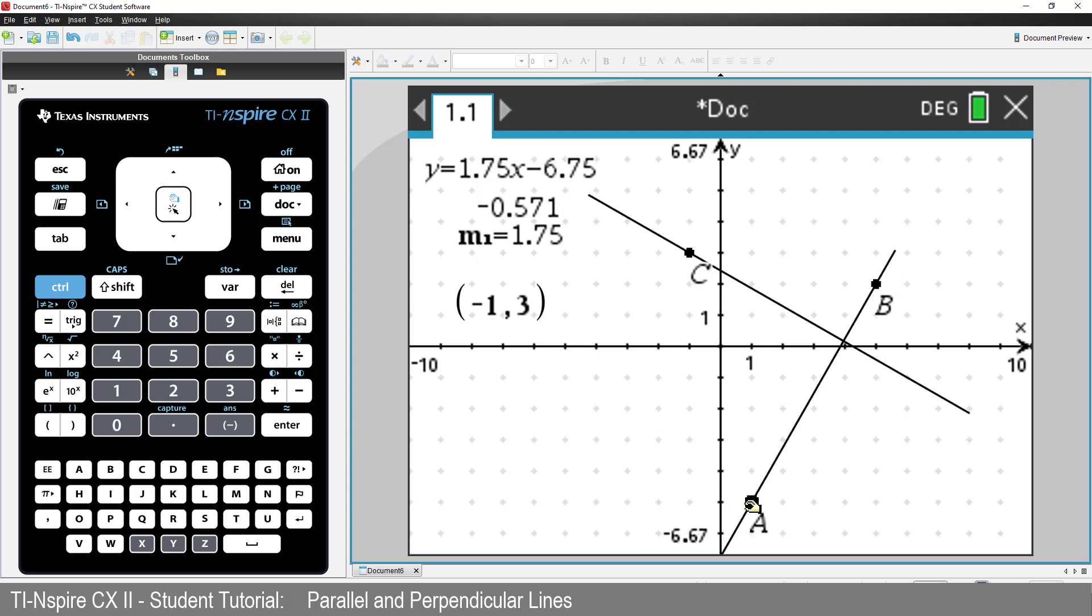Also, if the original line has a positive slope, the perpendicular one has a negative slope.